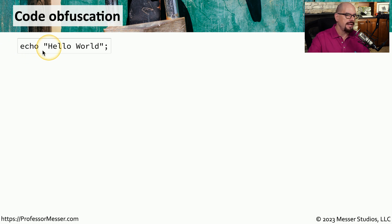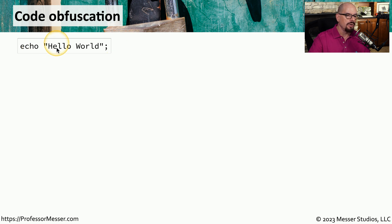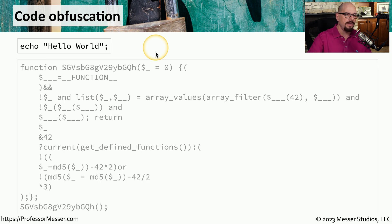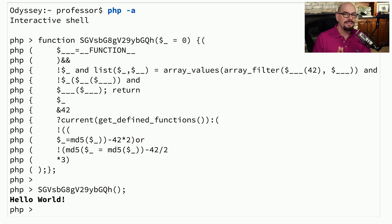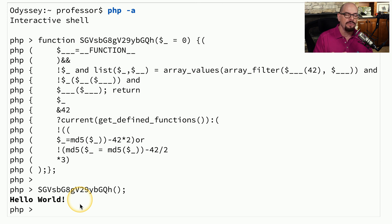Here's one line of code. This code says 'echo' and then inside of quotes it has 'hello world'. We can see from this simple line of PHP that it is simply going to put the words 'hello world' on the screen. If you applied an obfuscation technique to that one line of code, you can create a script that looks very different. This is valid PHP code that has taken our original one line of PHP and obfuscated it into something very different. Pasting it into a PHP shell, you can see that it produced the output 'hello world', which is exactly the same as that original one line of PHP.